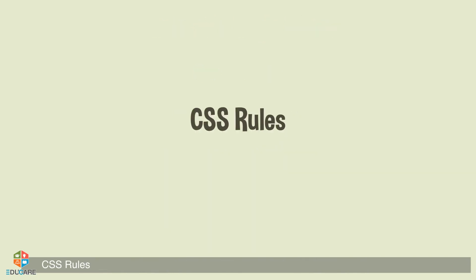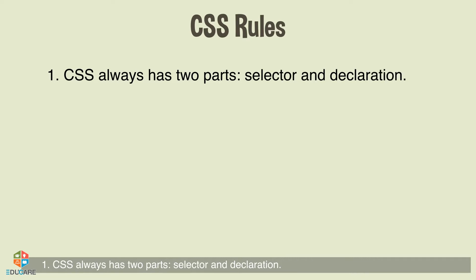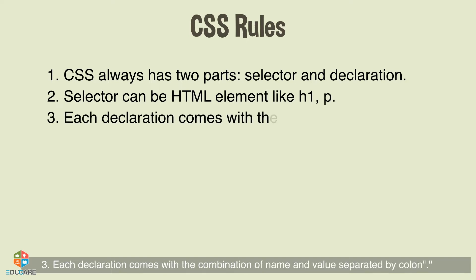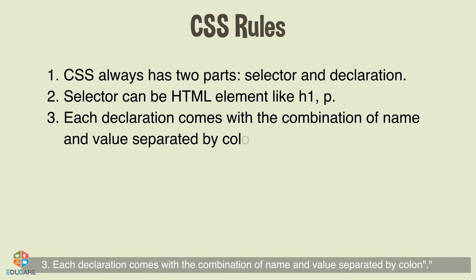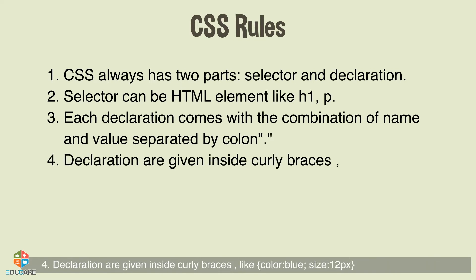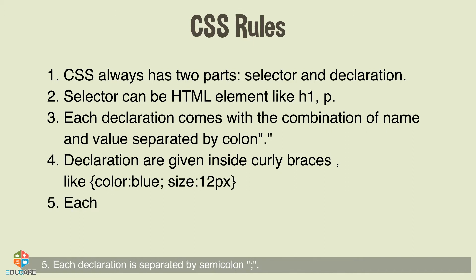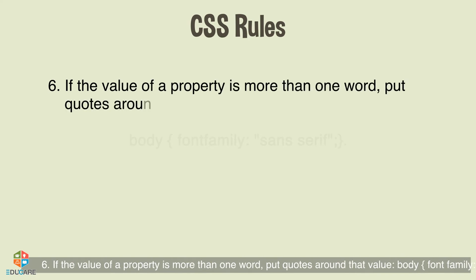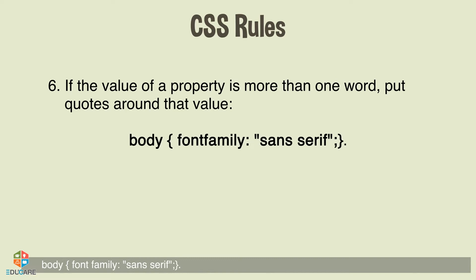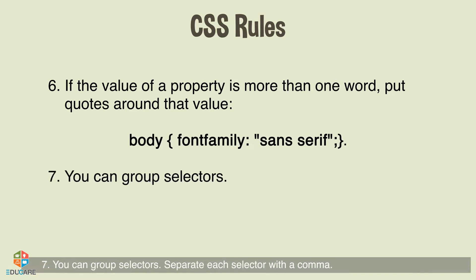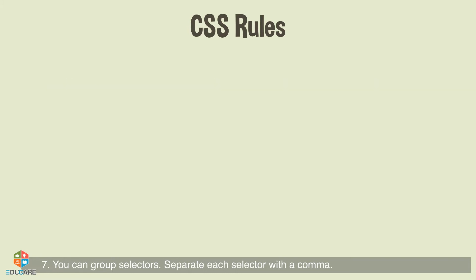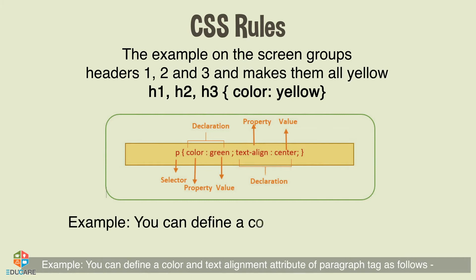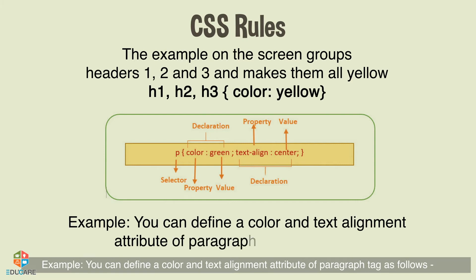CSS rules always have two parts: selector and declaration. The selector can be an HTML element like h1 or p. Each declaration comes with a combination of name and value separated by a colon. Declarations are given inside curly braces, and each declaration is separated by a semicolon. If the value of a property is more than one word, put quotes around that value. You can group selectors by separating each with a comma — for example, grouping headers h1, h2, and h3 and making them all yellow.